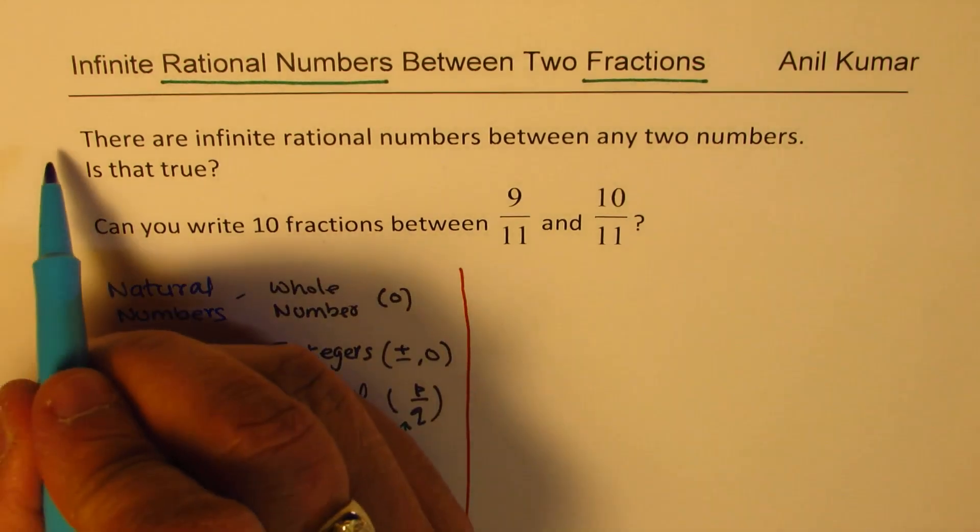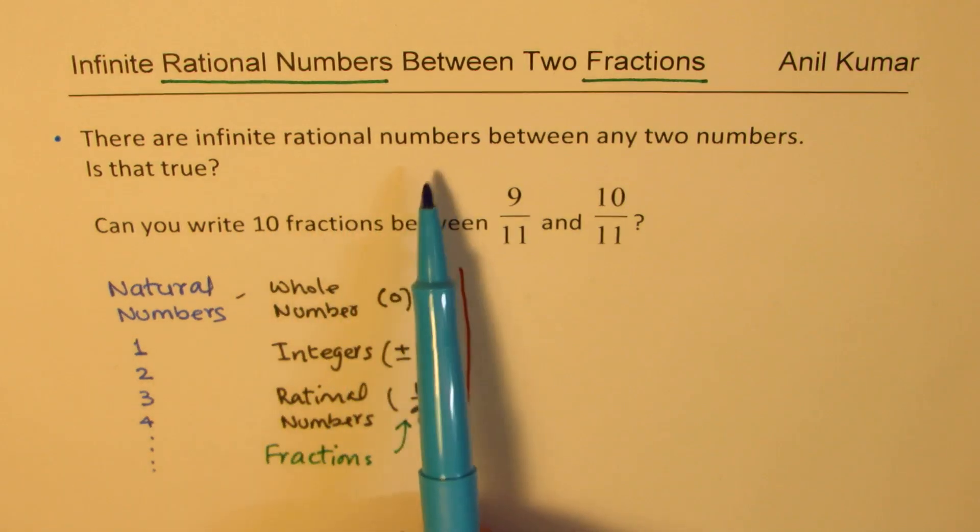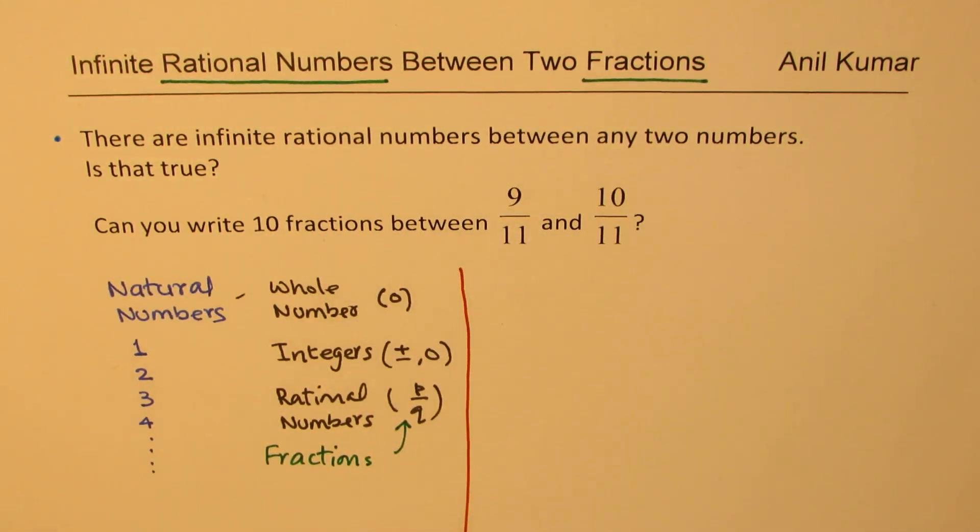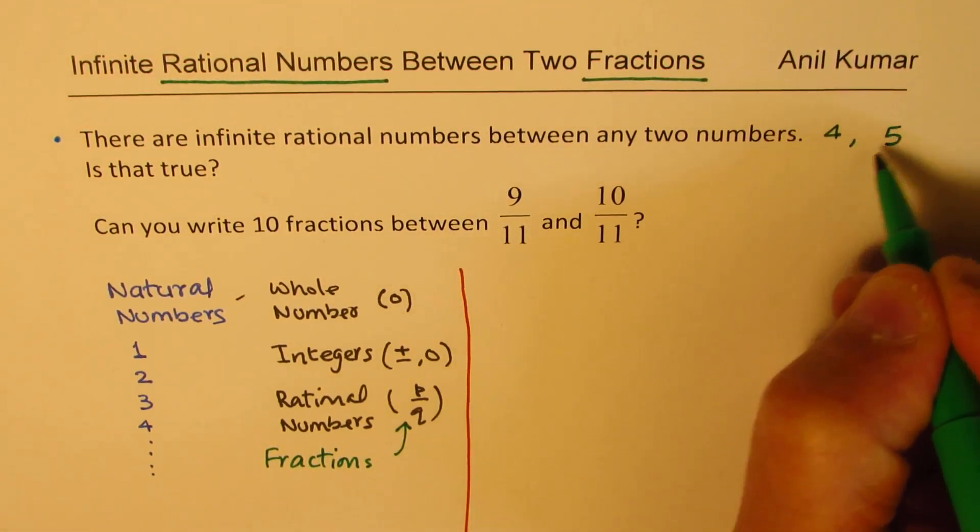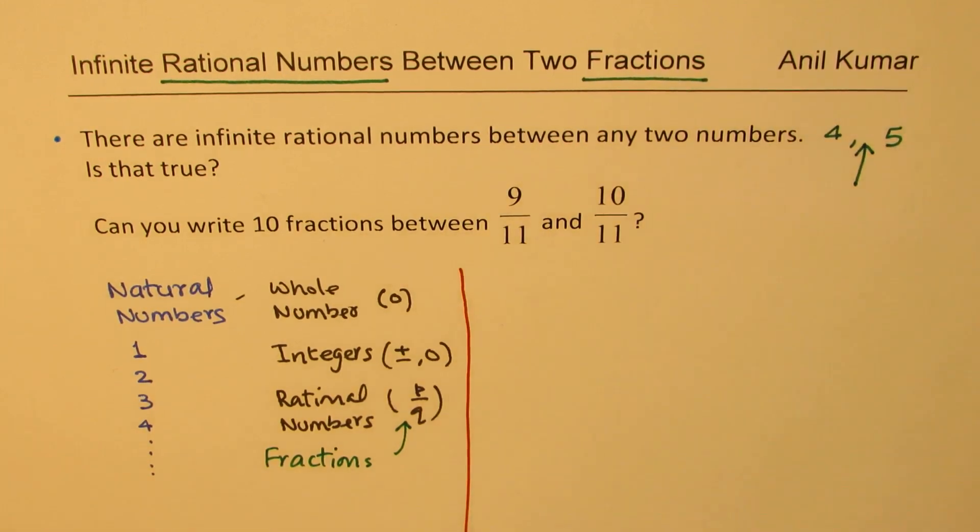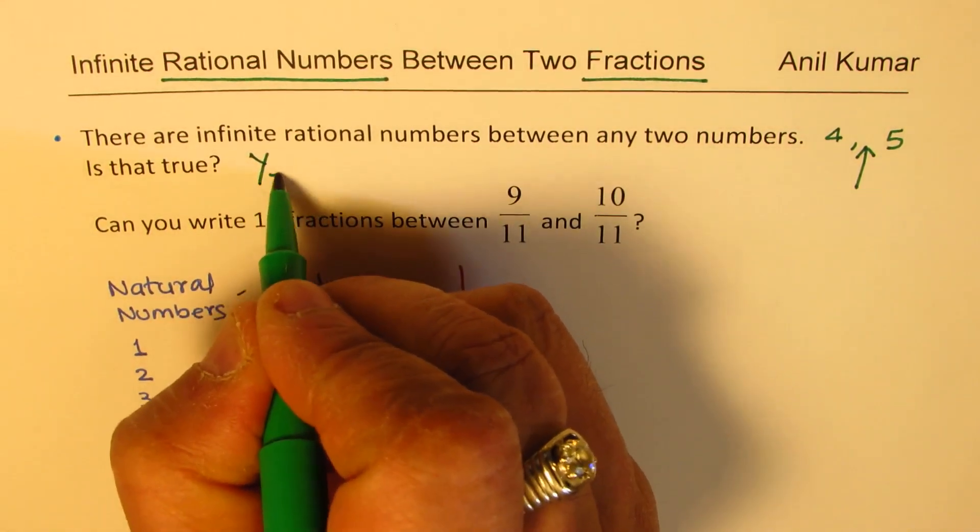So, first statement here which you find is that there are infinite rational numbers between any two numbers. Well, any two numbers could be, let us say if I take a number 4 and 5, then in between 4 and 5, we have infinite rational numbers. That's what we are trying to say. Is that true? Well, most of you know this is true and the answer is yes.